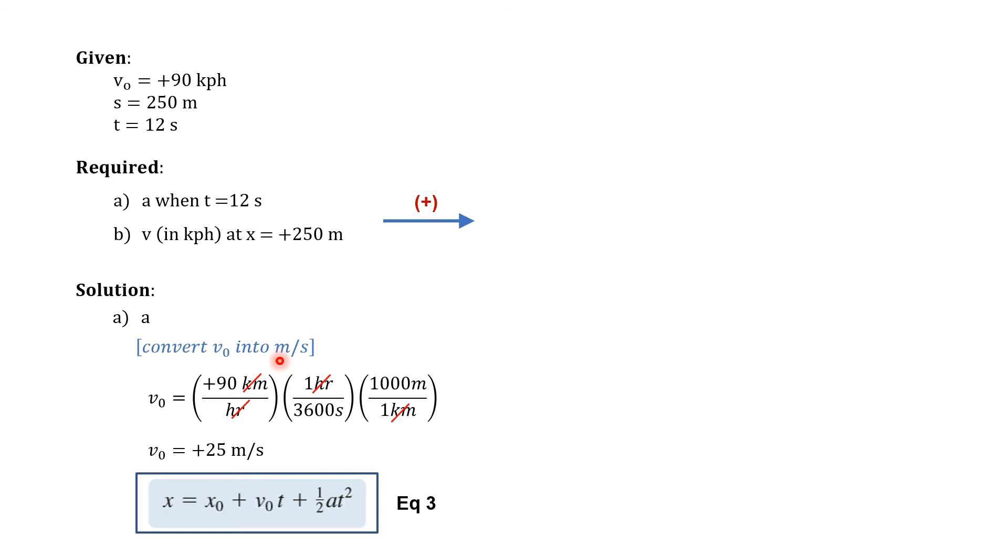This final position has a value, which is positive 250 meters, while the initial position is the same as the reference that we set. So this is just equal to zero. Then our initial velocity is already in meters per second. And this time t is equal to 12 seconds.